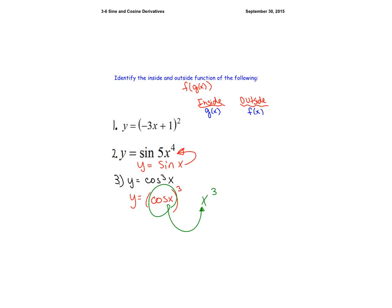So to conclude this video, we have these functions. Let's see if you can identify the insides and outsides. The outside function here will be x to the second power; the inside function will be negative 3x plus 1. Over here, we have a double, so the outside function will be sin of x and the inside function will be 5x to the 4th. And lastly, the inside function seems to be cosine, and the outside function seems to be x cubed.